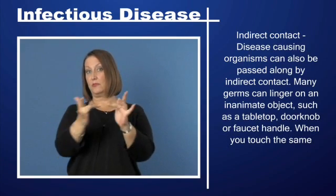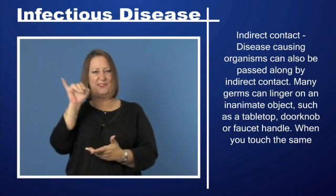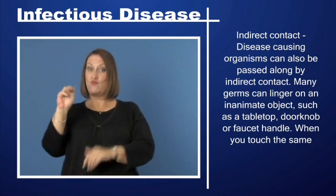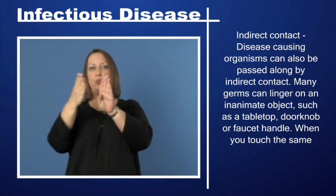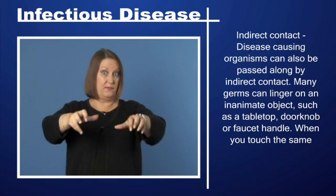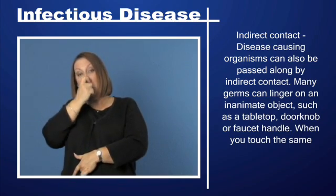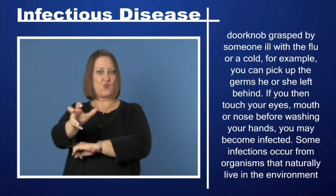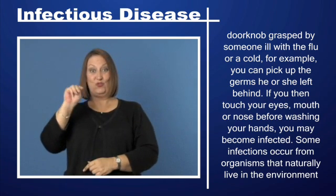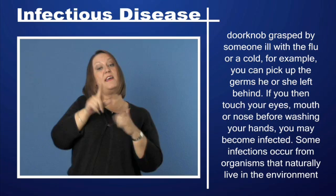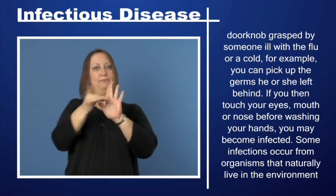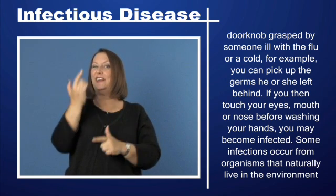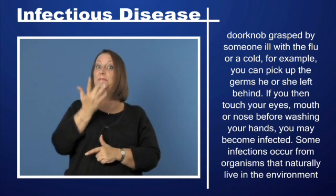Indirect contact: disease-causing organisms can also be passed along by indirect contact. Many germs can linger on an inanimate object, such as a tabletop, doorknob, or faucet handle. When you touch the same doorknob grasped by someone ill with the flu or a cold, for example, you can pick up the germs he or she left behind. If you then touch your eyes, mouth, or nose before washing your hands, you may become infected.